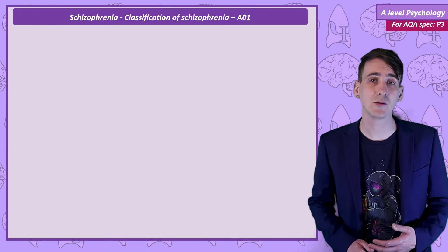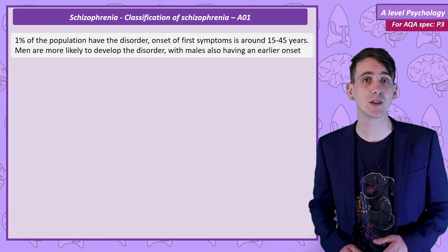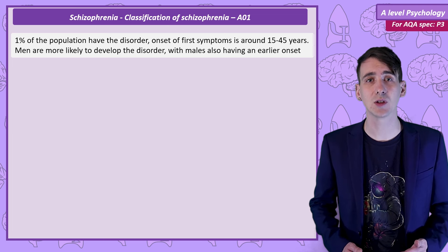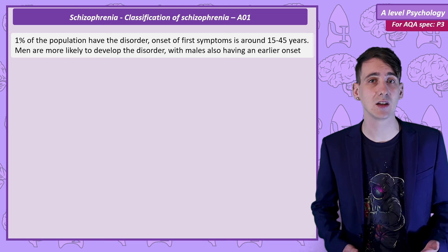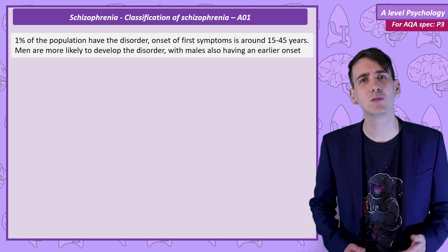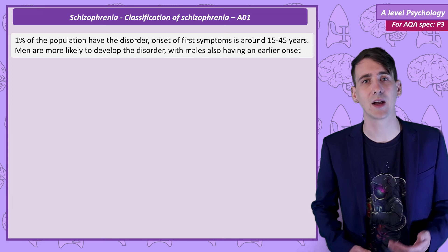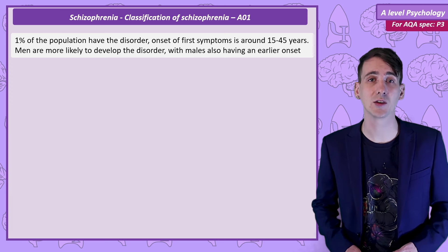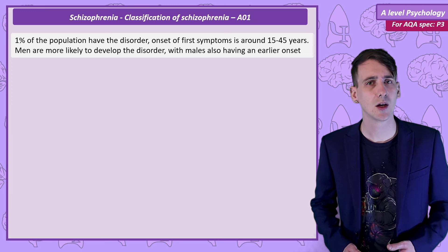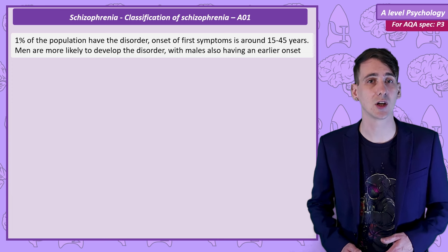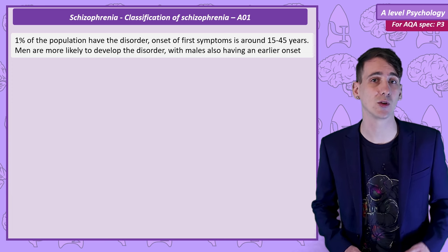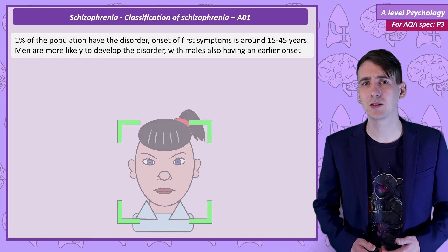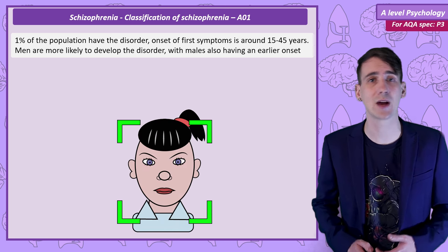Schizophrenia is a mental health disorder that affects around 1% of the British population. The first symptoms usually appear between 15 and 45, and men are much more likely to develop schizophrenia than women. A common misconception is that schizophrenia is about having multiple personalities, but that's a disorder termed dissociative personality disorder. A good definition for schizophrenia would be to describe it as a break from reality.